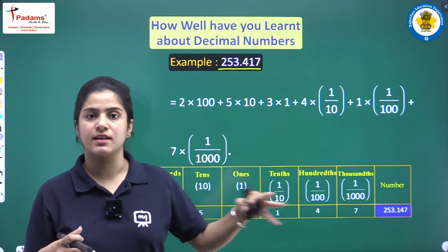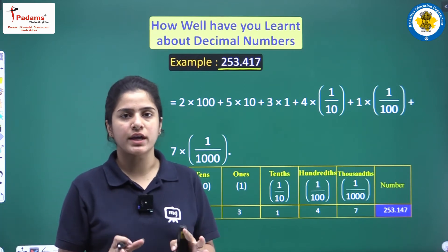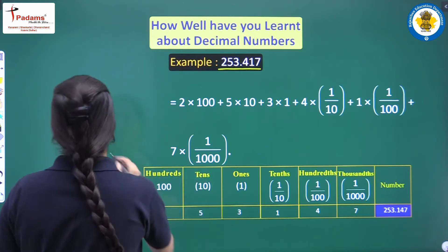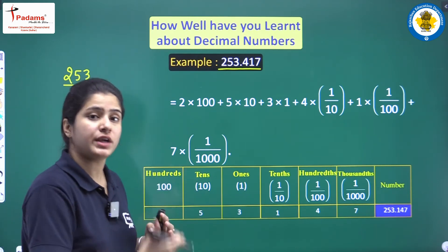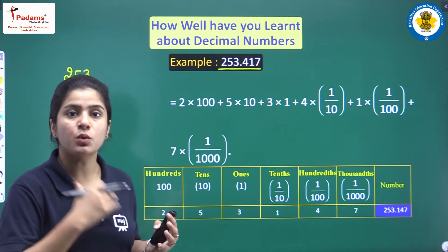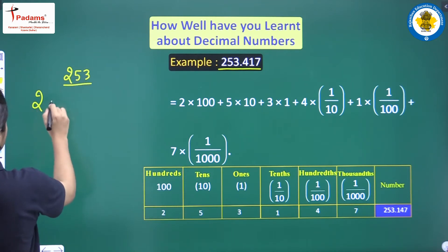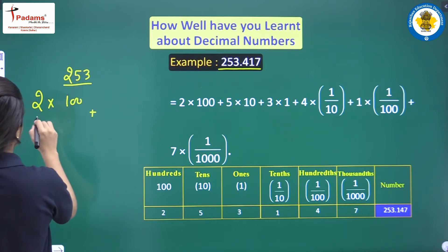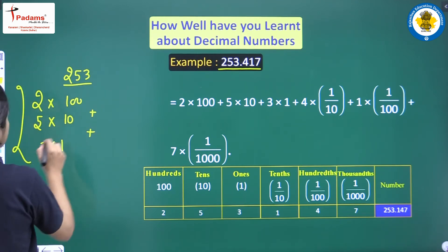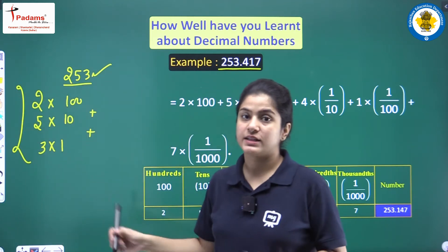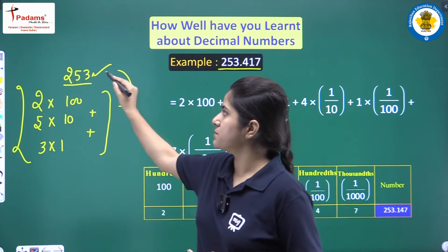Now we have to expand this number. How can we expand this number? Firstly, students, forget about the decimal. We are talking about only 253 — that is 200, 50 and 3. This can be written as 2 into 100 plus 5 into 10 plus 3 into 1. This is the expanded form of this particular number.